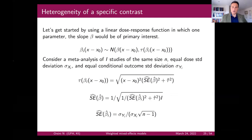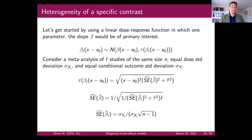The inputs of dose-response meta-analysis are all these different contrasts, maybe at different levels of the exposure. You want to learn from them to then derive and ask about a contrast that you care about — you are not bounded by the chosen reference of any individual study.